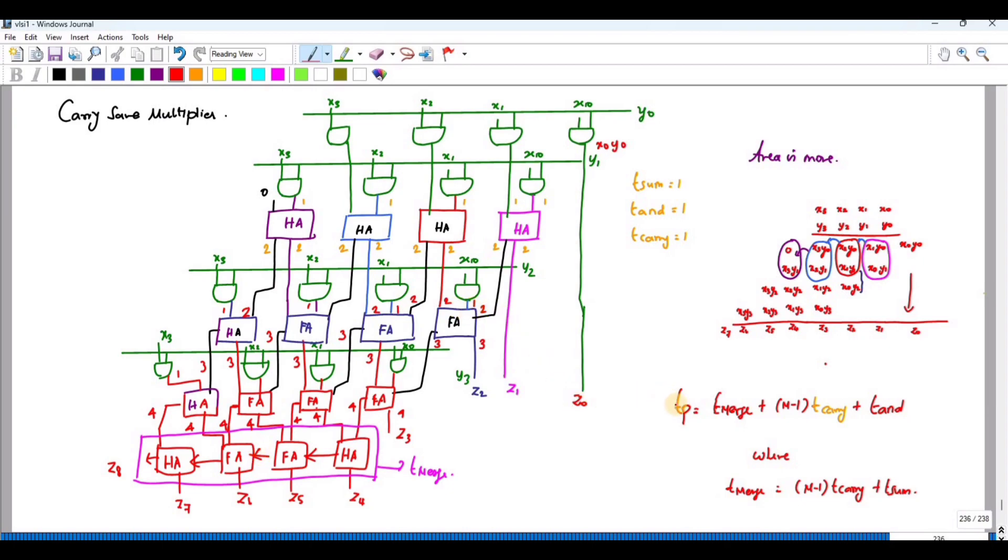I can write the critical path Tp equals T-merge plus the ripple carry adder. This is your ripple carry adder, T-merge, that is equal to M minus 1 into T-carry plus T-sum. Why is it so? You can see, this is your carry: 1, 2, 3. M is 4 here because 4 inputs. So 3 into T-carry plus T-sum, 1 into sum - 3 carry plus 1 sum. This is your T-merge.